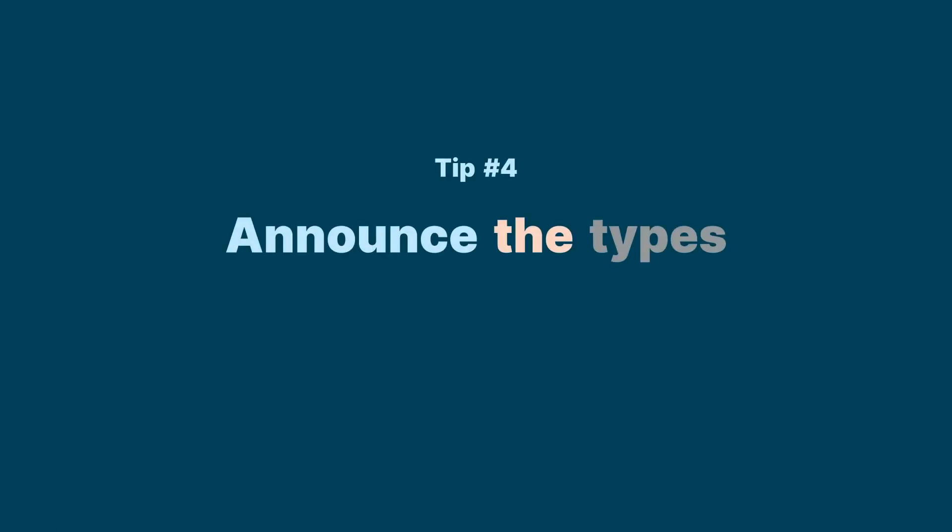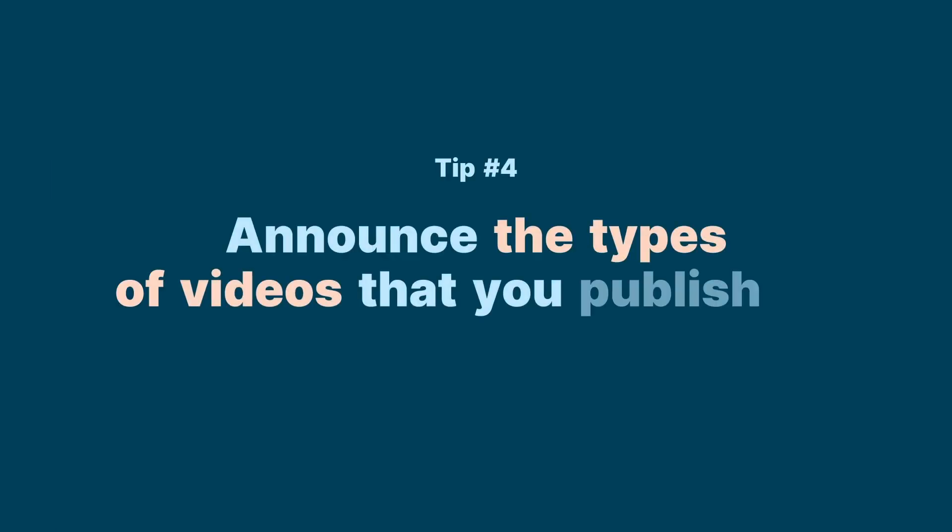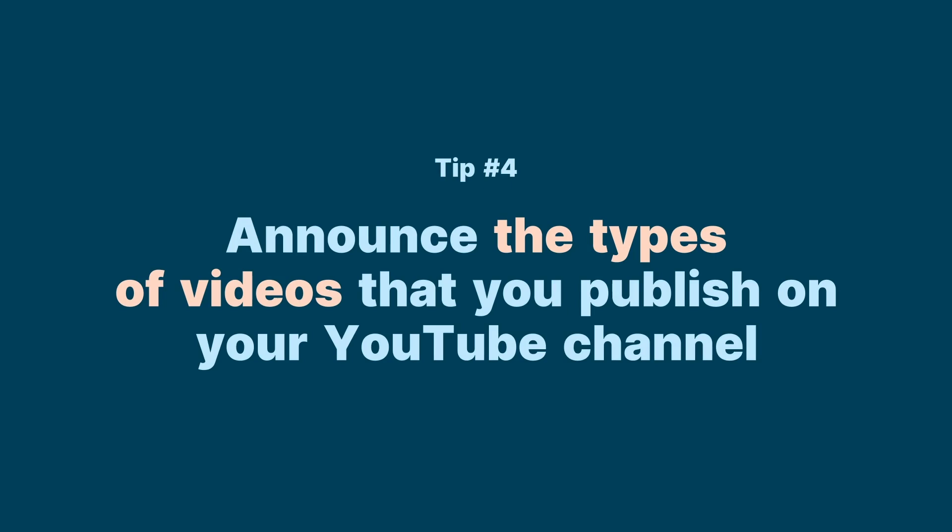Tip number four: announce the types of videos that you publish on your YouTube channel. Another thing you can do to make your channel description stand out is to mention the types of videos that you publish. Are you creating how-to videos, in-depth educational guides, maybe product demos, or are you vlogging your daily life? Make sure to mention all that in your YouTube channel description.